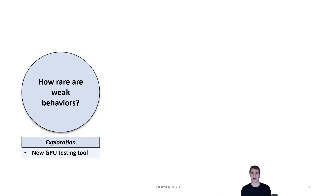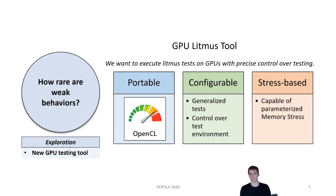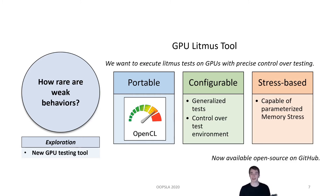We'll start with one of exploration: how rare are weak behaviors? Our initial contribution in this development is a new GPU litmus testing tool. The motivation here is that we wanted to execute tests with fine-grained control over what and how we're testing. Such a tool needs to be portable — in our case, we developed an OpenCL, a multi-platform graphics framework. It needs to be configurable with easily swappable tests and really precise control over the test environment. And it needs to be capable of memory stress, which is a technique shown by prior work to be absolutely vital to showing interesting behaviors, wherein a whole lot of memory operations run concurrently to the litmus test. As a quick aside, this tool is now available on GitHub and it's already been deployed by a couple of other researchers, which is really exciting.